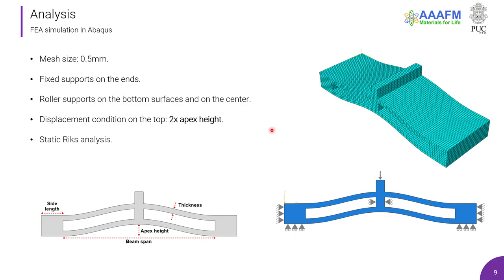The finite element analysis was performed in Abaqus with a mesh size of 0.5 mm, fixed supports at the ends, roller supports on the bottom surface and on the center to prevent rotation of that part, and the displacement boundary condition at the top of 2 times the apex height, which is the maximum displacement allowed by the mechanism. The static Riks analysis was chosen to model this simulation once it deals better with these types of buckling behavior.